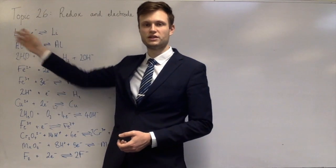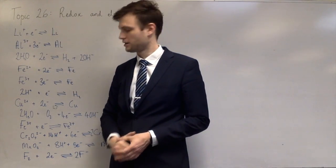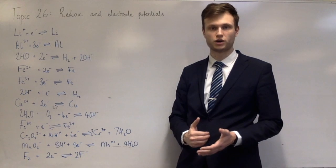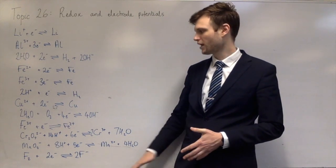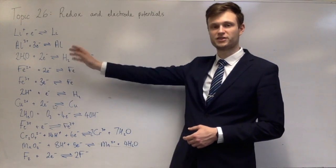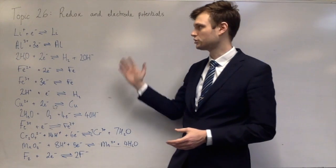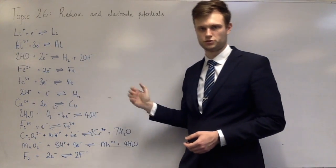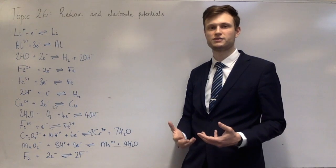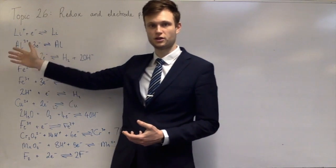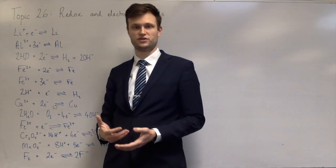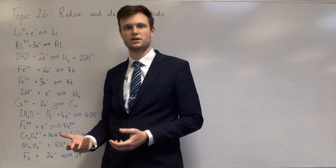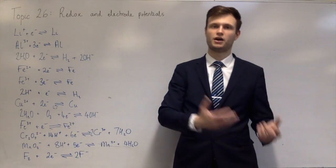Lithium becomes lithium 1+ quite readily, and fluorine becomes fluoride quite readily as well. Everything in between is written in a specific order to show how much they want to be oxidised or how much they want to be reduced. We call things that want to be oxidised, like lithium, good reducing agents.